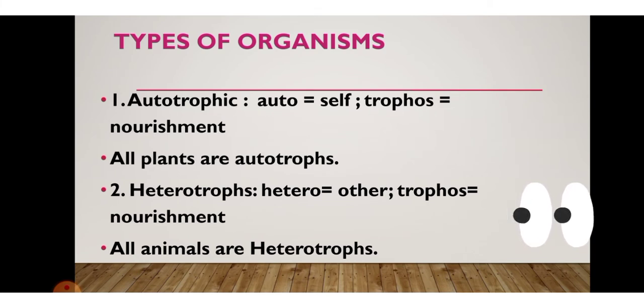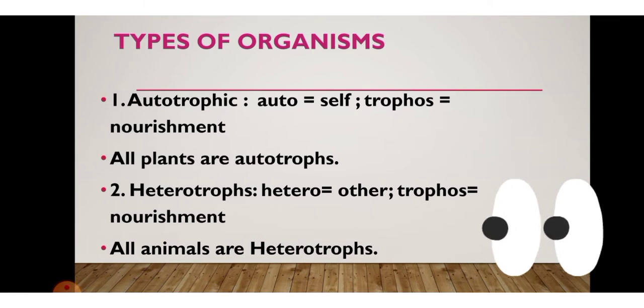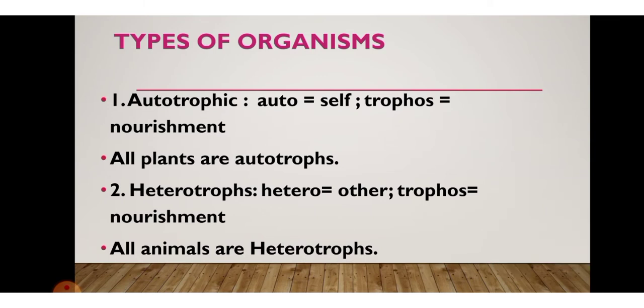Now, organisms are classified based on how they prepare their food. The first type is autotrophs. 'Auto' means self and 'trophos' means nourishment. Organisms that can prepare their own food are called autotrophs. All plants are autotrophs — they prepare their own food material with the help of their body system.